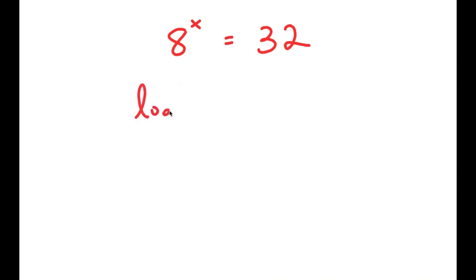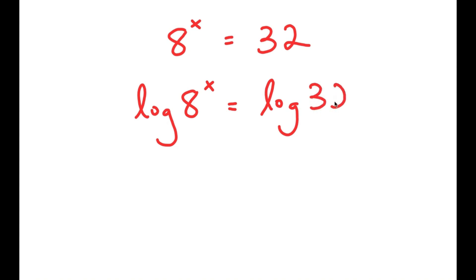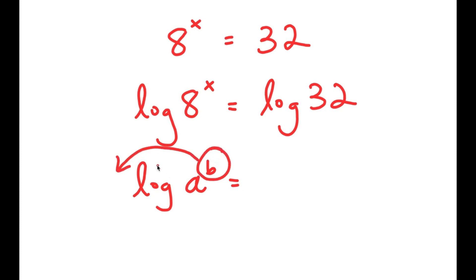So I get log of 8 to the power of x is equal to log 32. Now, if I have something in the form log of a to the power of b, I can move b to the front of the logarithm. So this turns into b times log a — that is, log of a to the power of b is equal to b times log a.